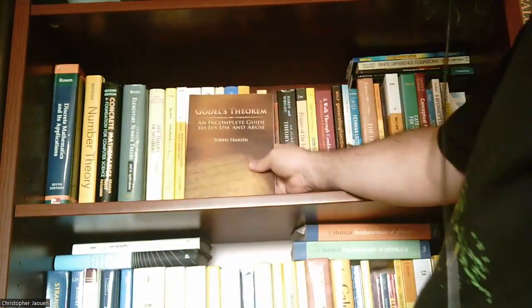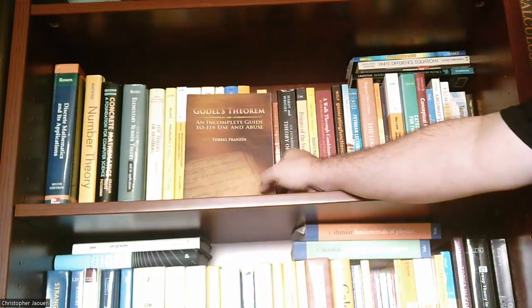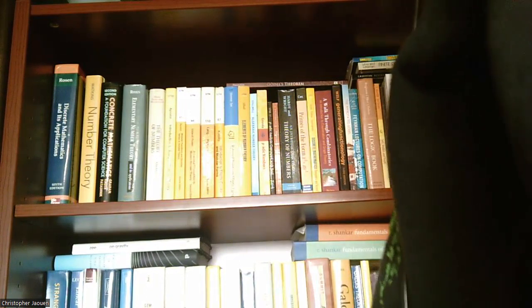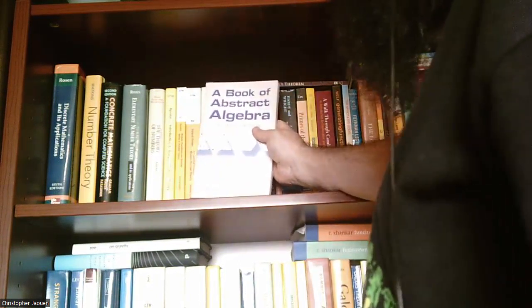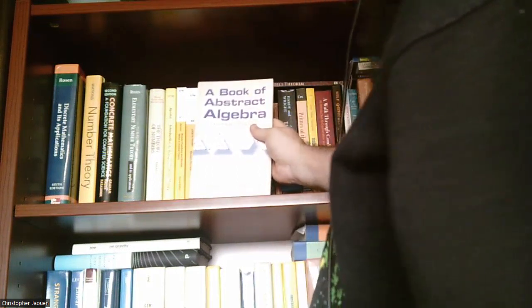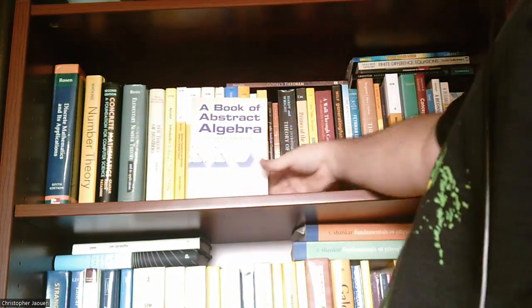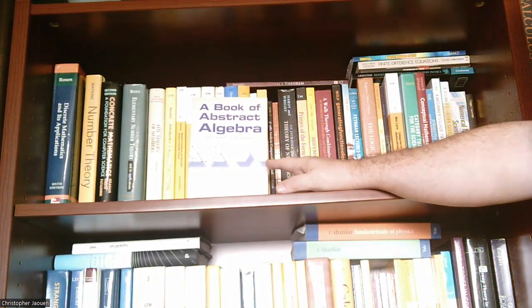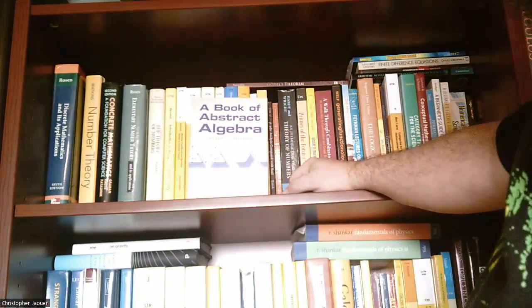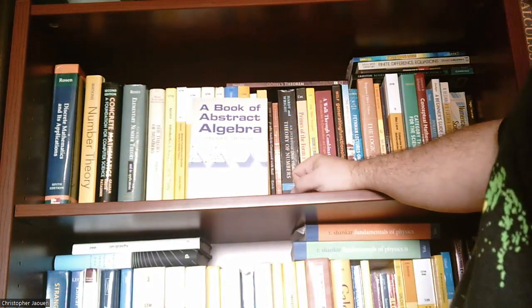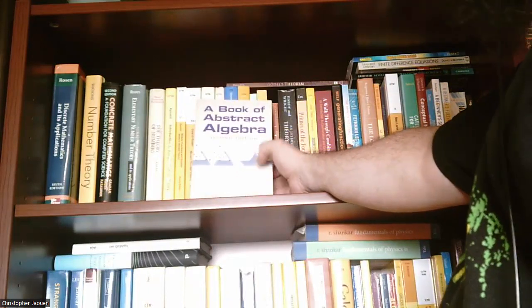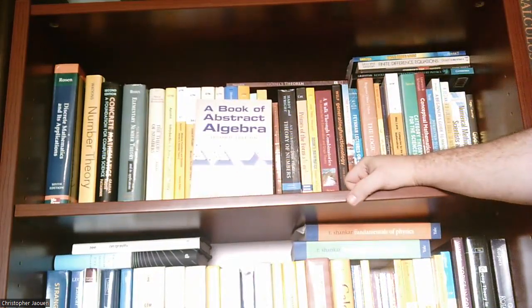Next I have Gödel's Theorem: An Incomplete Guide to Its Use and Abuse — haven't read it yet. Then a Book of Abstract Algebra, second edition, by Charles Pinter — a Dover title. They use this book every once in a while for the undergraduate abstract algebra course at my college and people seem to like it. It's only a few bucks as a Dover book. I've done some things in it because I've tutored that course.